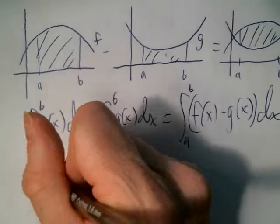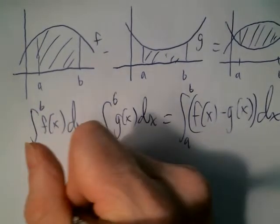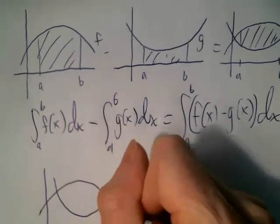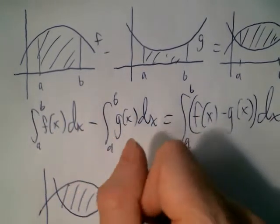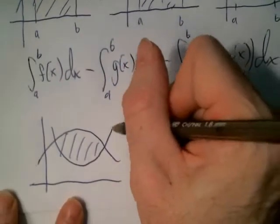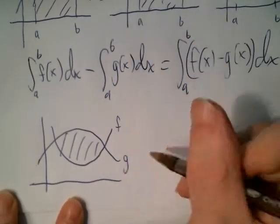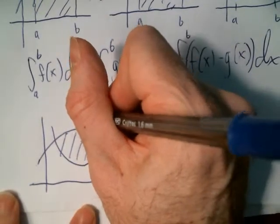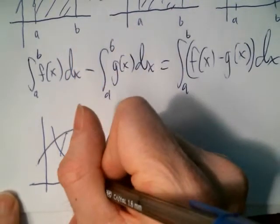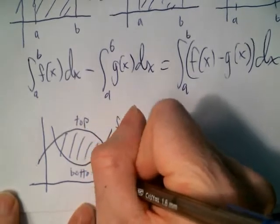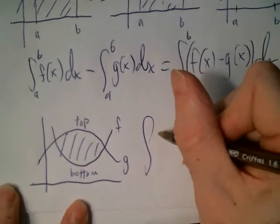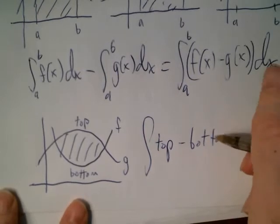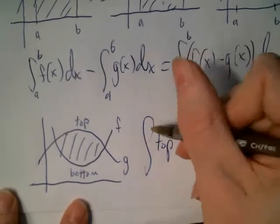Another way to think of it: if you're trying to find the area between two curves, this is F and this is G. You always think of top curve minus bottom curve. So the integral of the top curve minus the bottom curve tells you the area between the two curves.